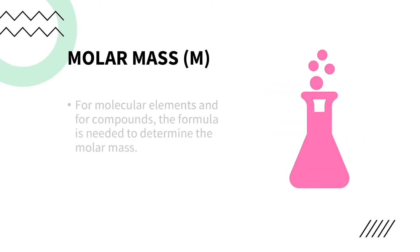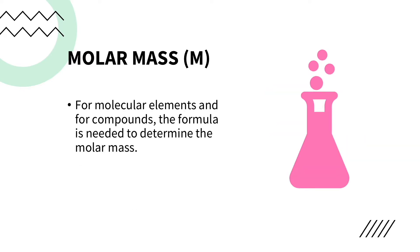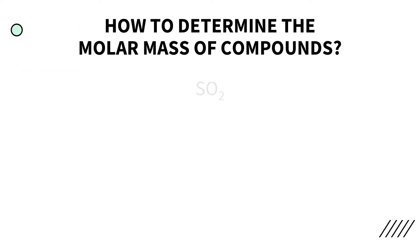For molecular elements or for compounds, the chemical formula is needed to determine the molar mass of the compound. For example, we have sulfur dioxide. In order to determine the molar mass of sulfur dioxide, we have to identify first the elements involved in the compound — we have sulfur and oxygen.